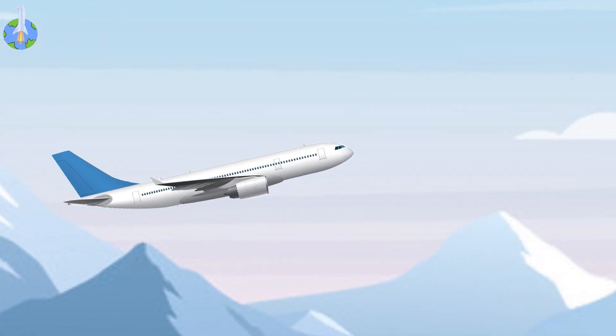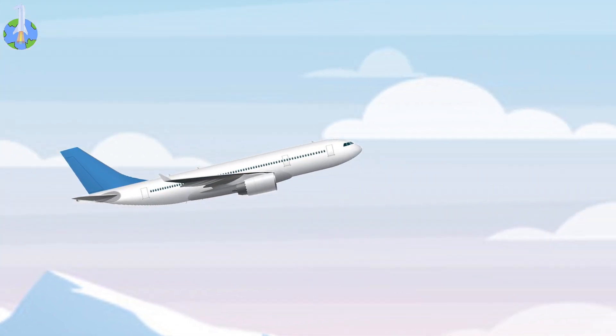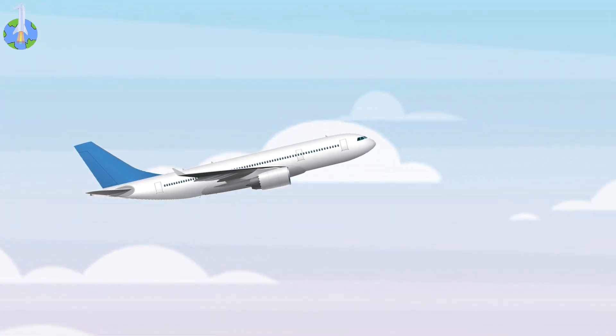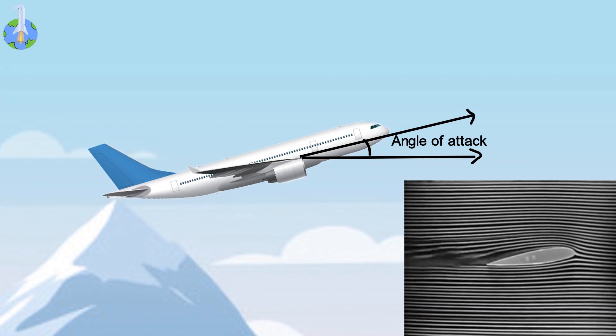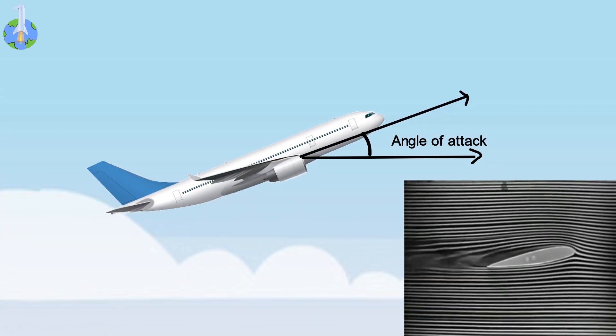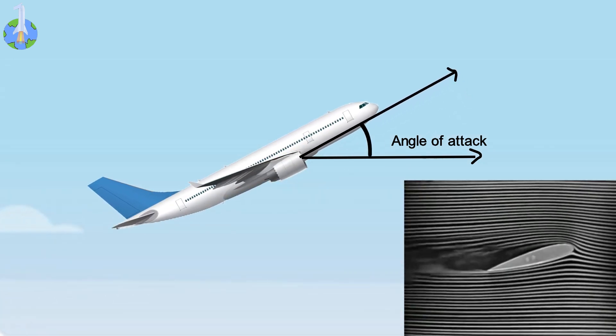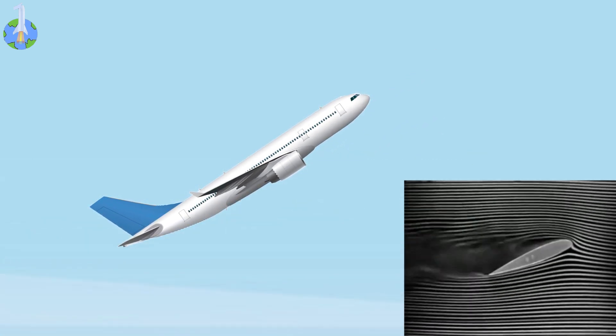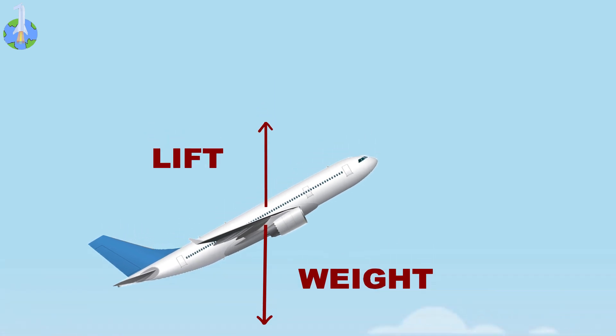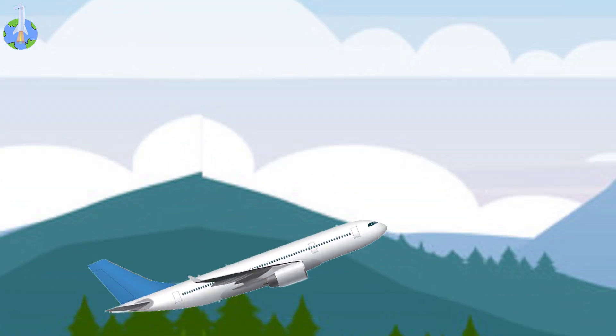When the plane goes into a steep climb, nosed up, the propeller cannot keep it at enough speed. The pilot increases the angle of attack to increase the lift. But if the angle of attack becomes too high, air starts separating from the wing and becomes turbulent. That causes the lift force to decrease drastically and it leads to stall.